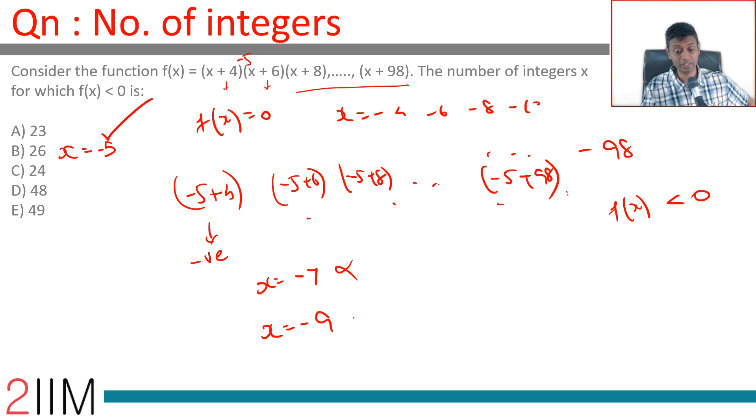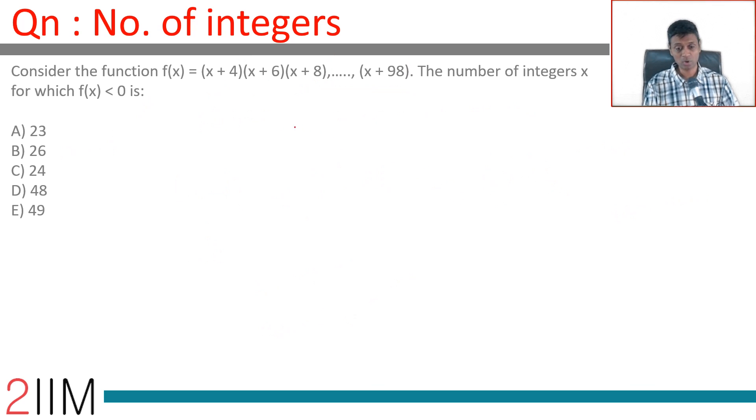x equal to -9 will work. Negative, negative, negative. Everything else is positive. Wonderful, we have cracked this. So what are the values that work?